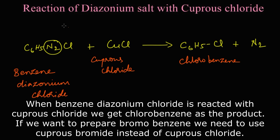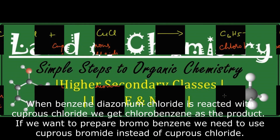When the freshly prepared benzene diazonium chloride reacts with cuprous chloride, we get chlorobenzene as the product with the liberation of nitrogen gas. In the same way, we can prepare bromobenzene by reacting benzene diazonium chloride with cuprous bromide. Thank you.